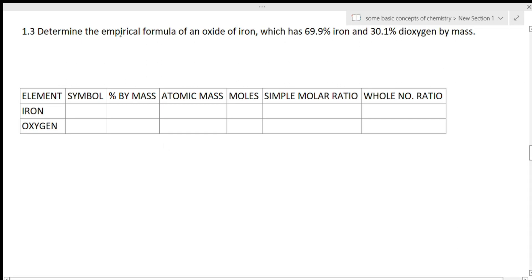The next question is 1.3: determine the empirical formula of an oxide of iron which has 69.9% of iron and 30.1% of dioxygen by mass. Okay, now empirical formula means the simplest formula which is formed by these two elements, that is iron and oxygen.